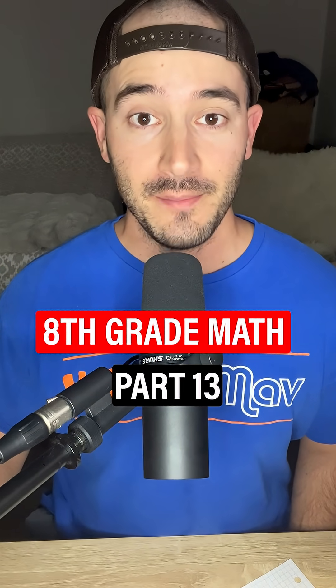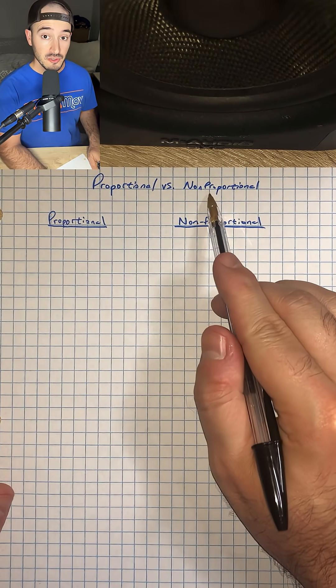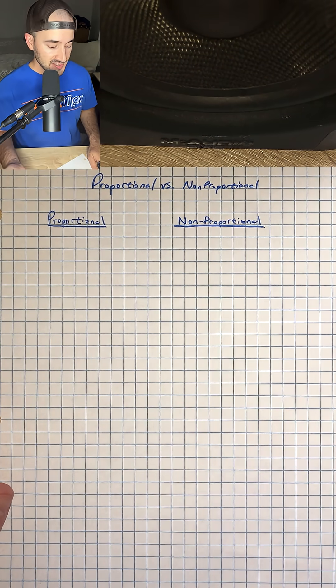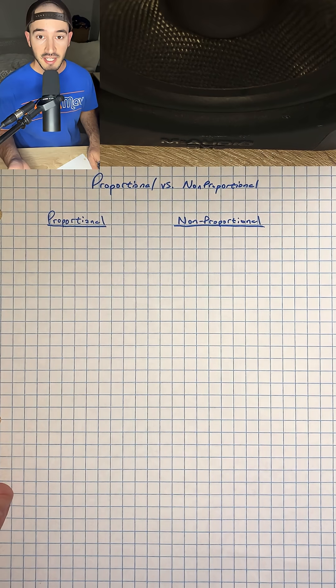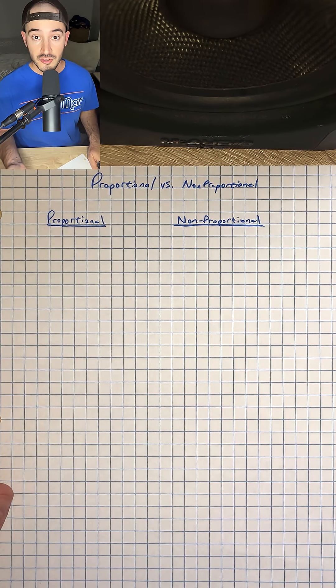This is everything you need to know for eighth grade math part 13. We're talking about proportional and non-proportional relationships, and there are a couple of things we can look at to determine if an equation or function is proportional or non-proportional.